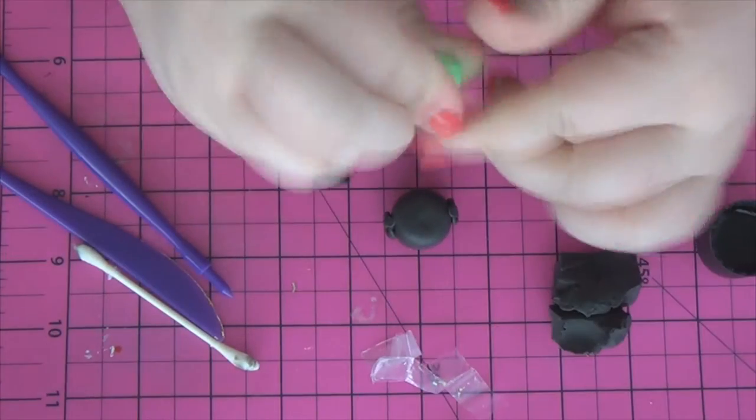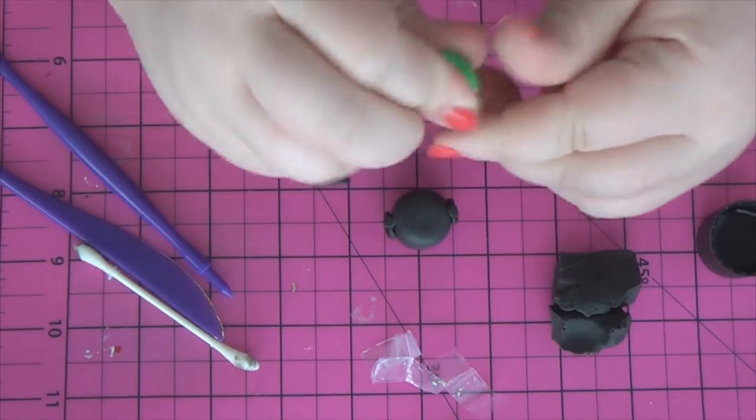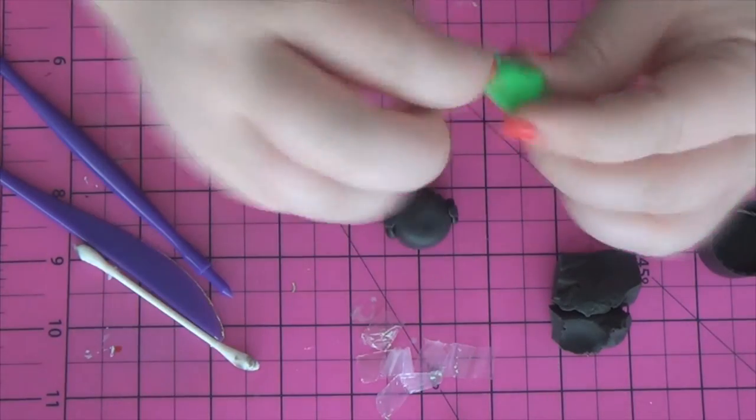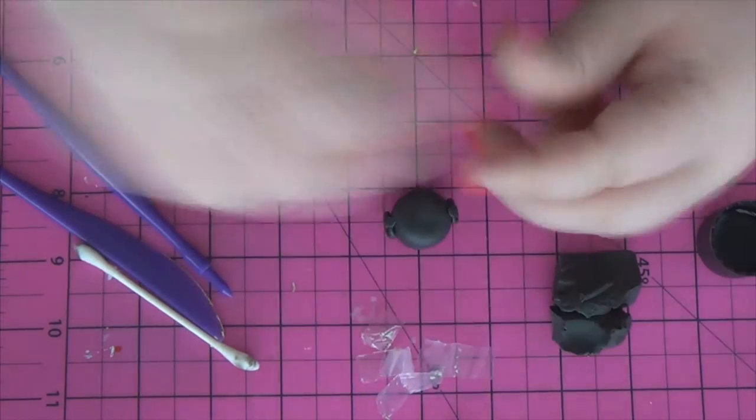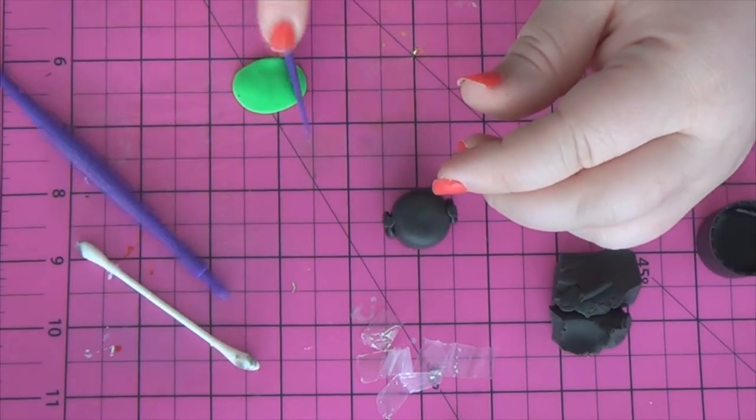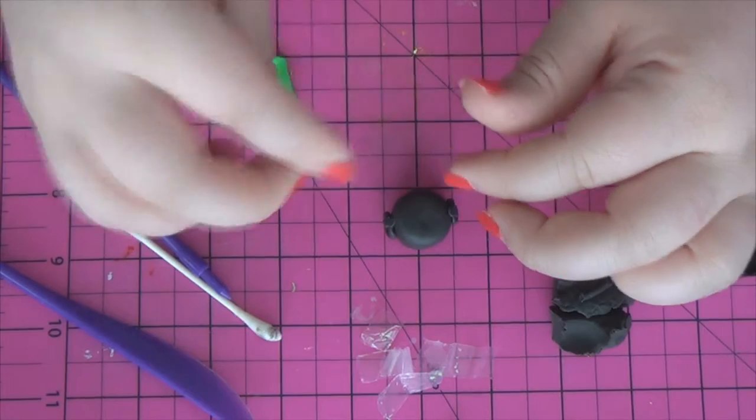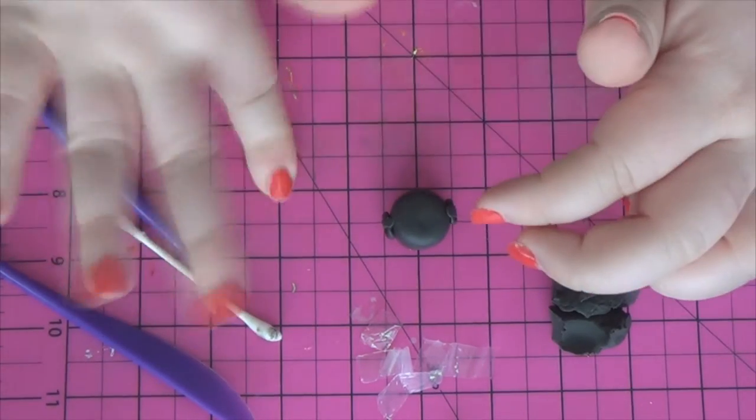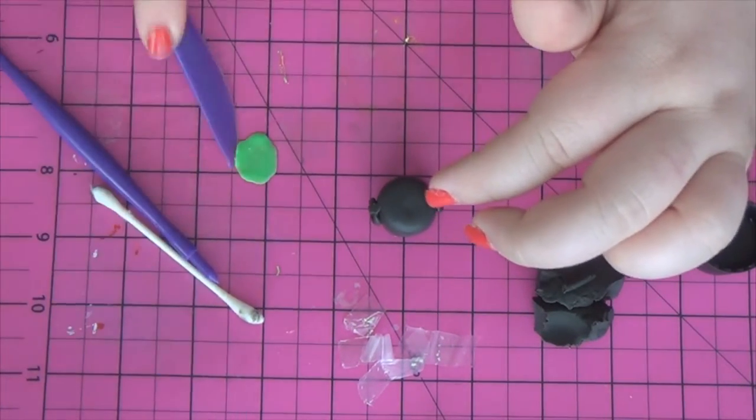So then I took my little neon green and I took a little bit of that off after, of course, getting it all nice and melded out the way I liked it. So I took a little bit of that off and I rolled it into a ball and I flattened it out.